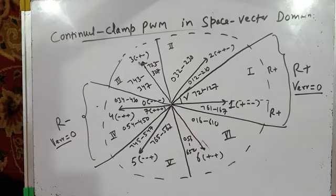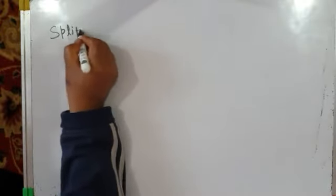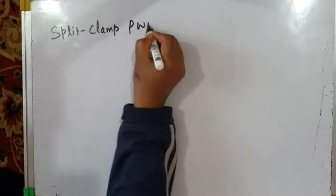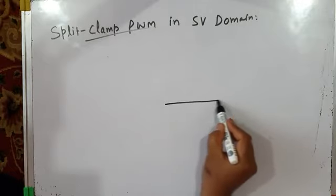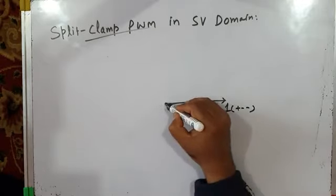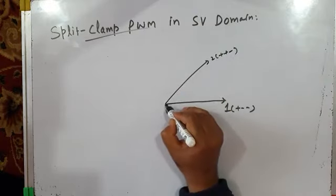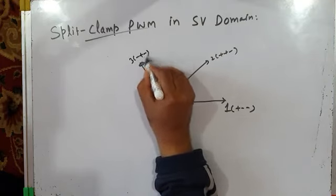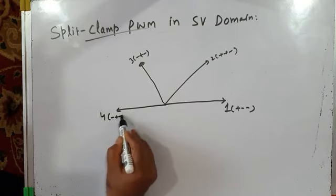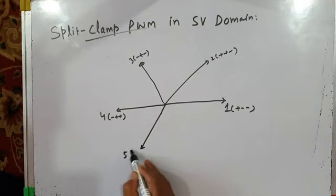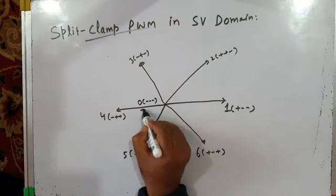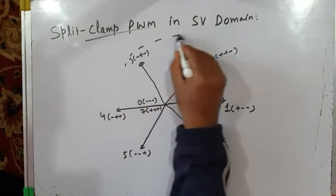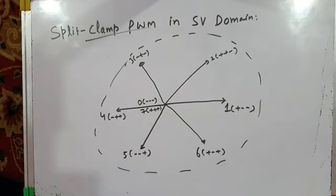This is about continual clamp PWM in the space vector domain. Similarly, we can discuss split clamp PWM in the space vector domain. The space vector diagram again has active vectors 1 through 6 and null vectors 0 and 7. In split clamp PWM, a particular phase leg is clamped to positive DC bus for gamma in one quarter and 60 minus gamma in the other quarter, and similarly in the negative half cycle. The 30-degree clamp is a special case where gamma equals 30 degrees.